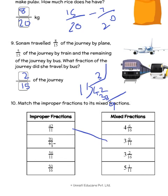70 divided by 16. So 70 divided by 16. 16 fours are 64 and we have the remainder 6. So it is 4 and 6 by 16 which is across here.